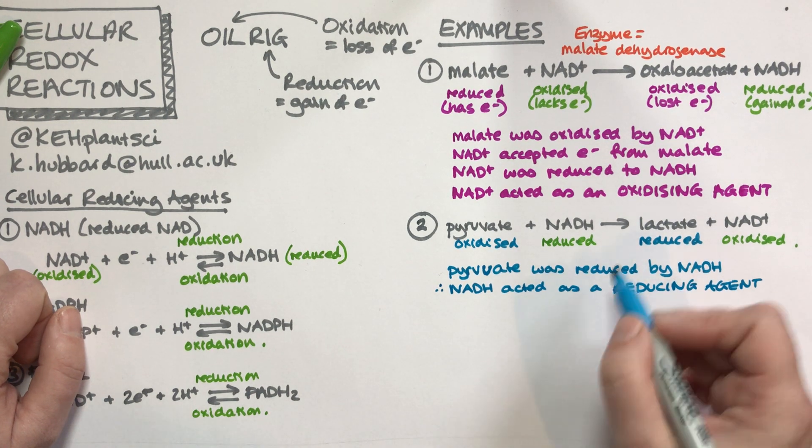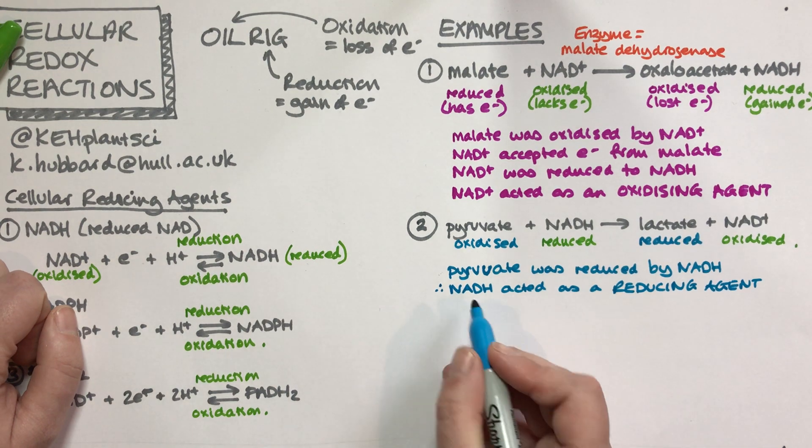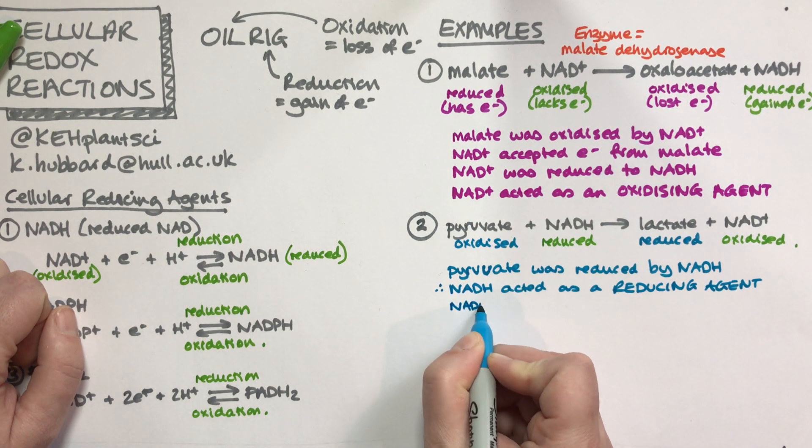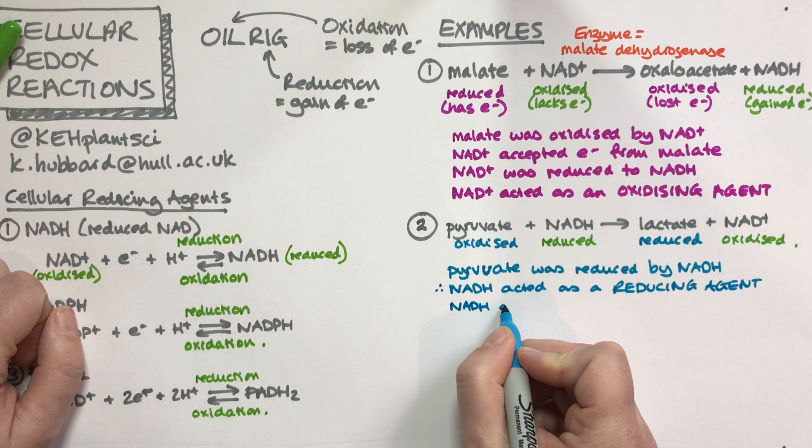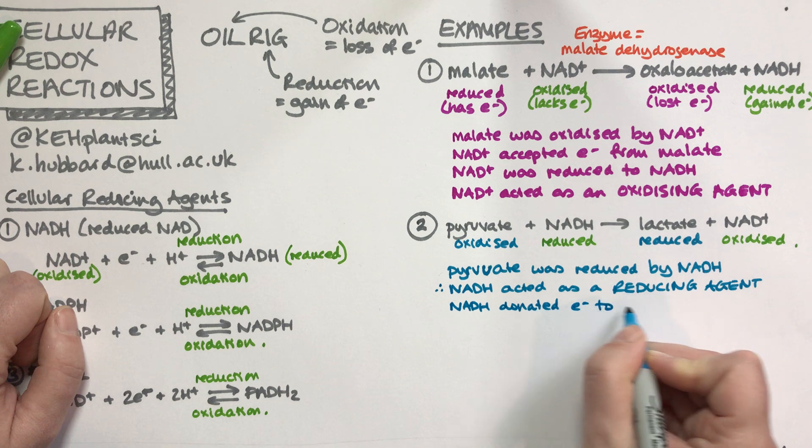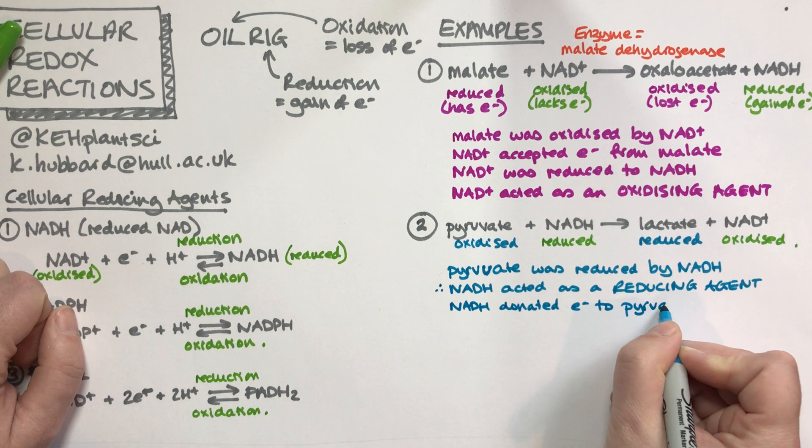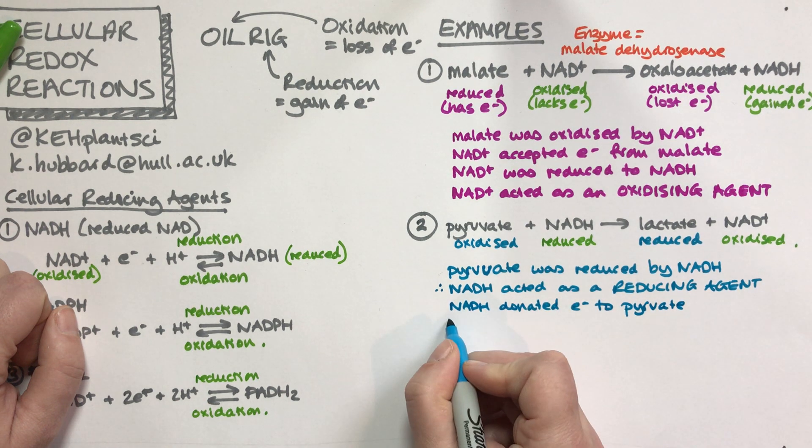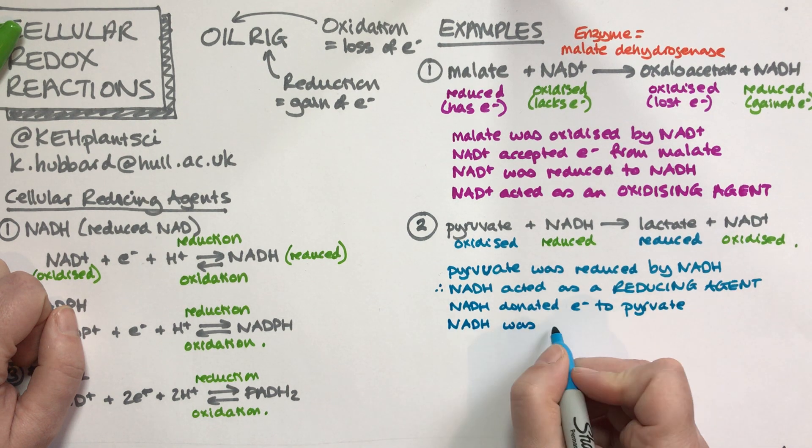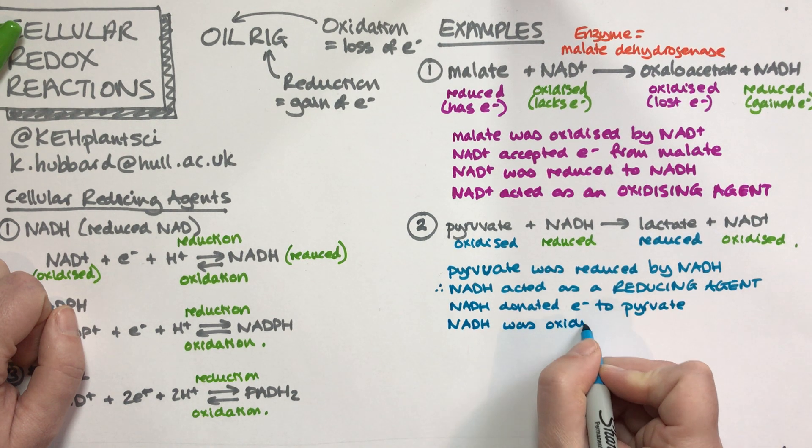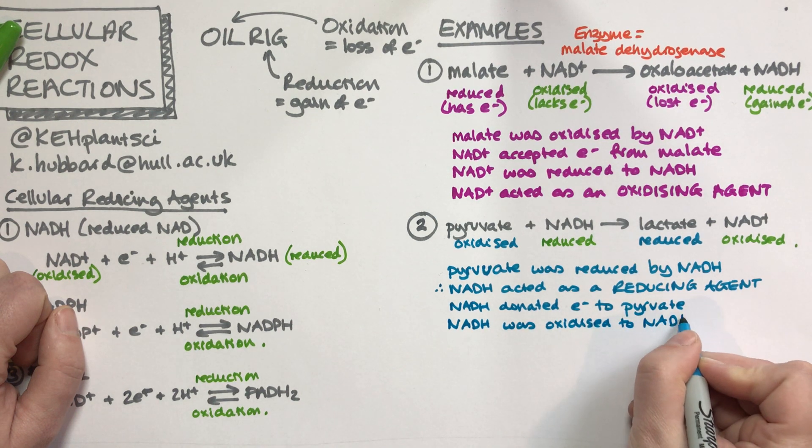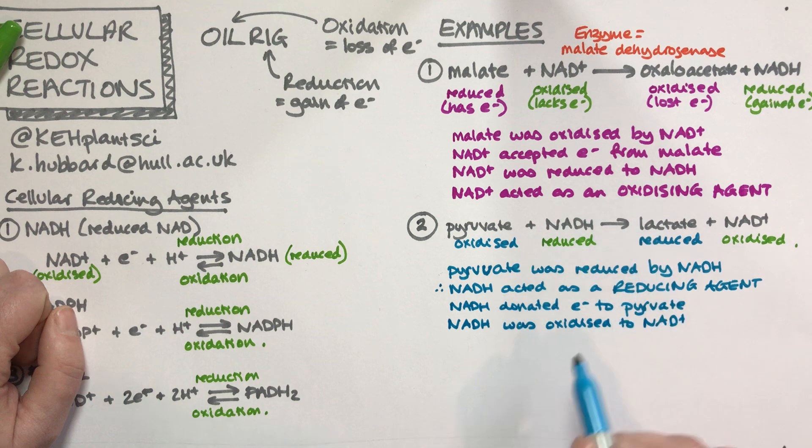The NADH, because it's got those electrons, because it can give electrons away, it's a reducing agent. NADH donated electrons to the pyruvate, and NADH itself was oxidized to NAD+. This is the opposite way round.